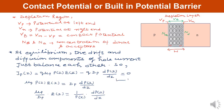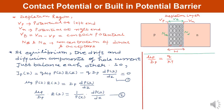From Einstein's relation, we know that μp/Dp = q/(kT). Also, the electric field Ex can be written as −dV(x)/dx. Now substituting into equation 2, the left-hand term becomes (q/kT)·(−dV(x)/dx), and the right-hand term is (1/p(x))·(dp(x)/dx). Call this equation 3.